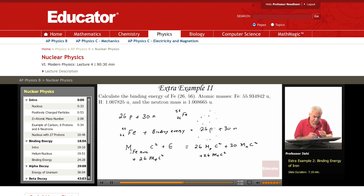So this is the mass of the atom, mass of the iron atom. So this is the atomic mass of iron. So now I have M Fe atomic C squared plus E is equal.